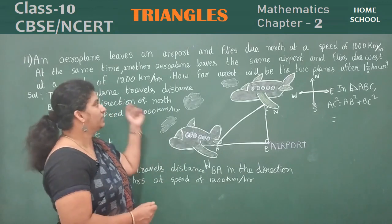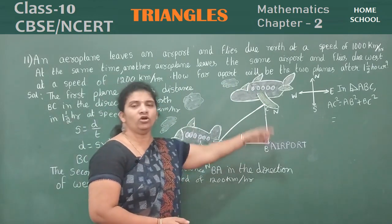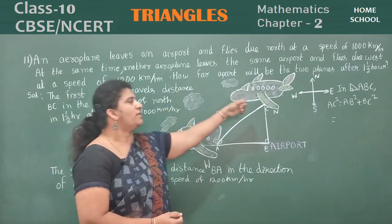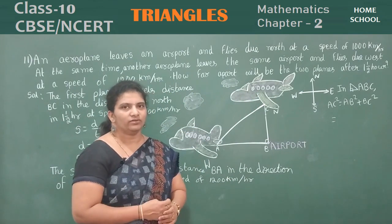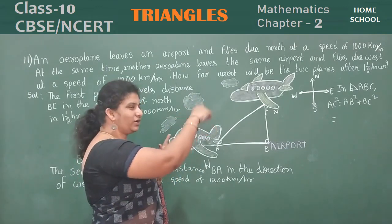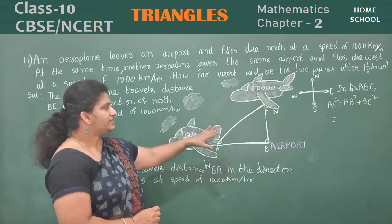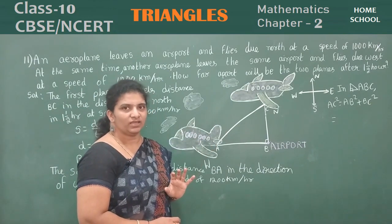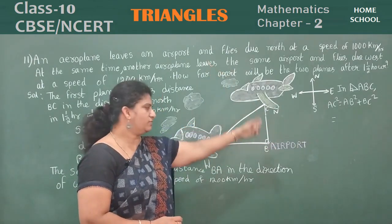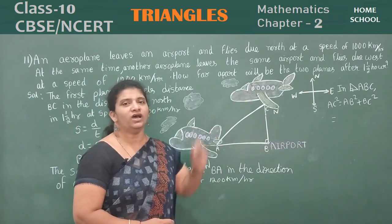We don't know the distance either. How far apart will the two planes be after one and a half hours? We know speed and we know time. After one and a half hours, how much distance are they apart? We are not calculating this on the ground — we are calculating in the sky. I have drawn clouds here. Two aeroplanes are like this. What is the distance between them after one and a half hours — that is your question.